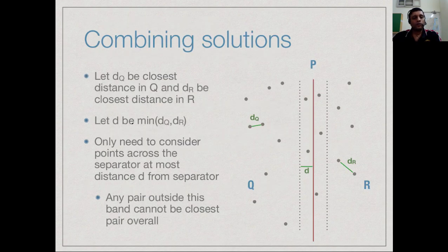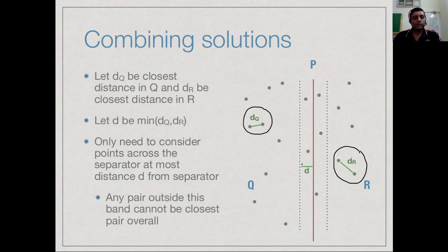Now we have to worry about how to combine them — specifically, how to handle points whose distance spans the line separating the two halves. Solving the problem on the left gives some pair as the nearest with distance dq; solving on the right gives distance dr. The smaller of these two is a candidate for the overall minimum. Let d = min(dq, dr). We are now interested in points which could be within distance d across this boundary.